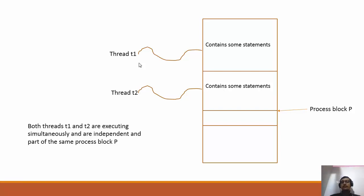As a result of threads running concurrently, the execution time is reduced and you give the CPU maximum efficiency. For example, if your whole program takes 10 seconds without threading, once divided into threads running in parallel, the response time decreases — perhaps to one second or one millisecond — allowing the processor to do other useful work. Both threads T1 and T2 execute simultaneously as independent parts of the same process.